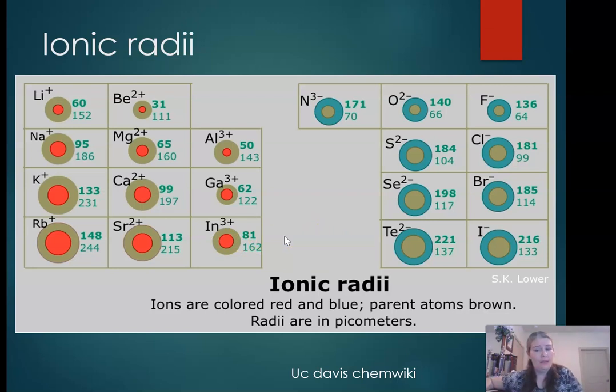Cations are always smaller than their neutral parent. Sodium plus is much smaller than sodium neutral. You also see that this effect increases as I get more positive. Aluminum three plus is smaller than magnesium, which is smaller than sodium. So the greater the positive charge, the smaller the ion is.